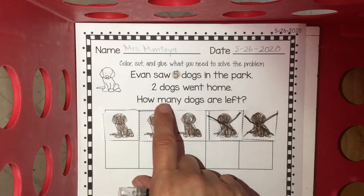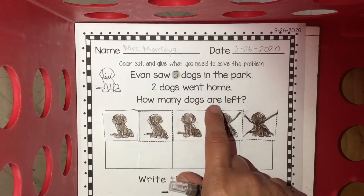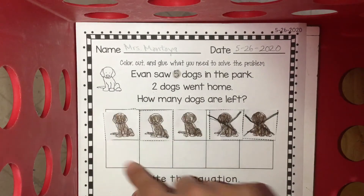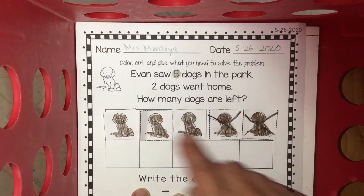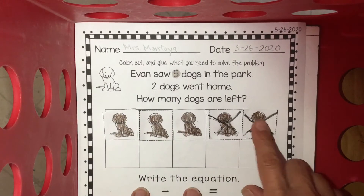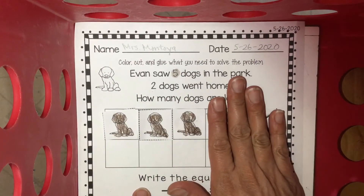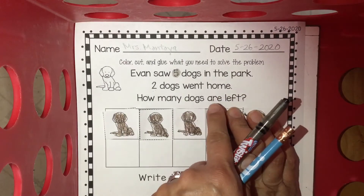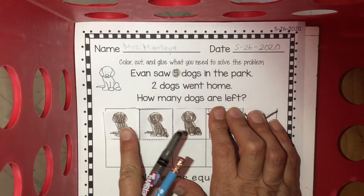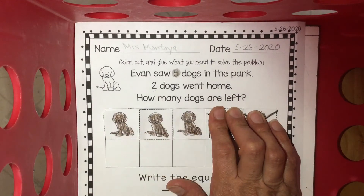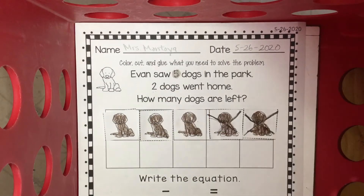And then it asks: how many dogs are left? So if this was my park and I had five doggies — Evan saw five doggies there — and then one, two went home, how many doggies are left? One, two, three. My answer is three.